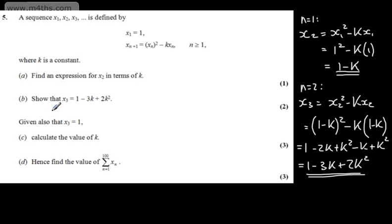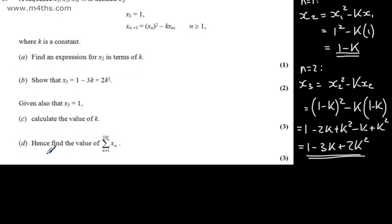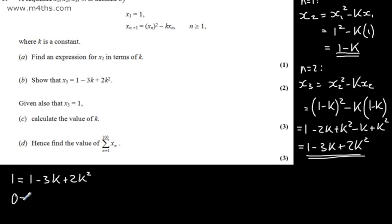In part C, for three marks, given that x₃ = 1, we can write 1 = 1 − 3k + 2k². Subtracting 1 from both sides gives 0 = 2k² − 3k.